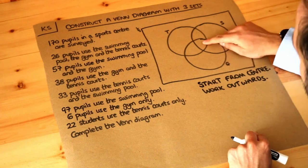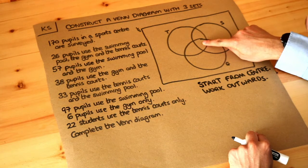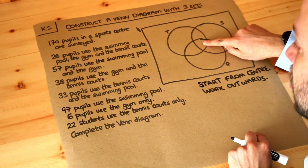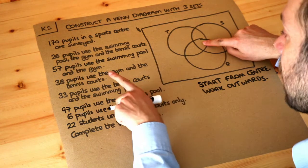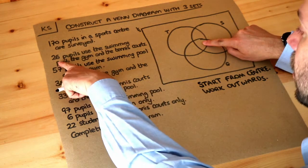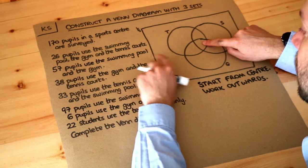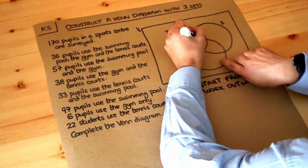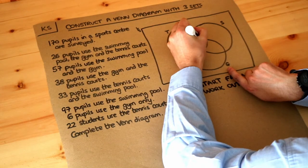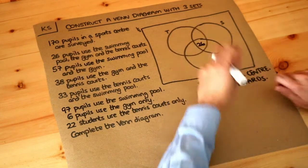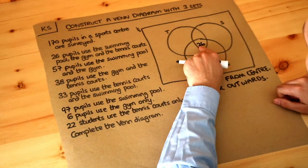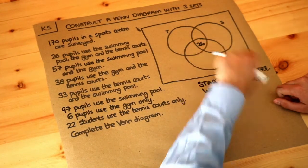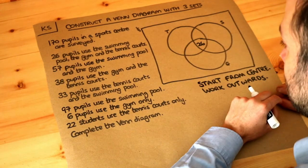This middle region represents the students who use the tennis courts, the swimming pool, and the gym. We're told that 26 people use all three, so we put 26 in the centre. Remember, we put a single number in a region to indicate how many students it represents.